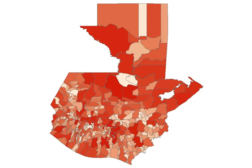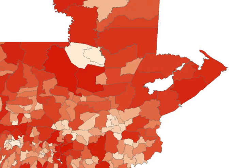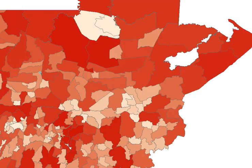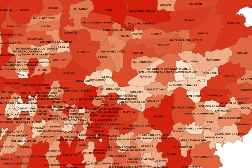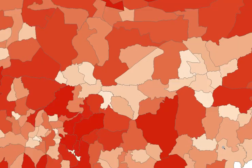Another new layer in our ADC Whirlmap 6.0 product is Admin 2 Boundaries. When looking at the country of Guatemala, you can see this thematic map shows populations. The brighter the red, the heavier dense population exists. When zooming in, you can see we have names of all these administrative boundaries.